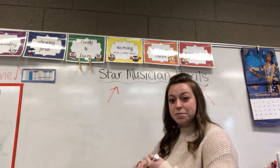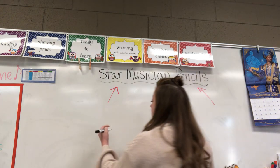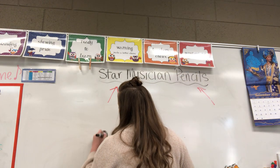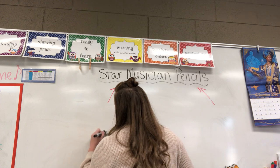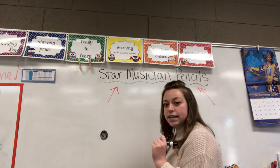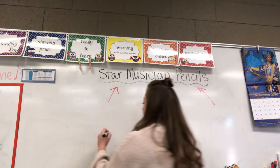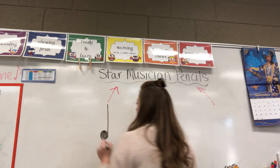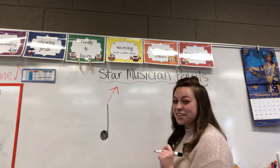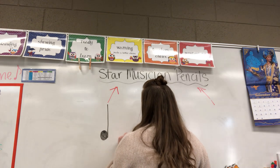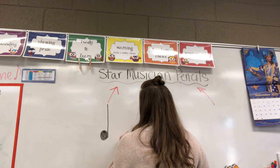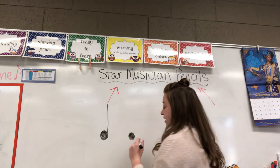Alright, can you see the board okay? So here is what a quarter note looks like. It has a filled-in note head — it's all colored in — and it has a stem that goes off the side. That is a quarter note. And then an eighth note kind of looks similar, but I want you to see if you can spot the difference.